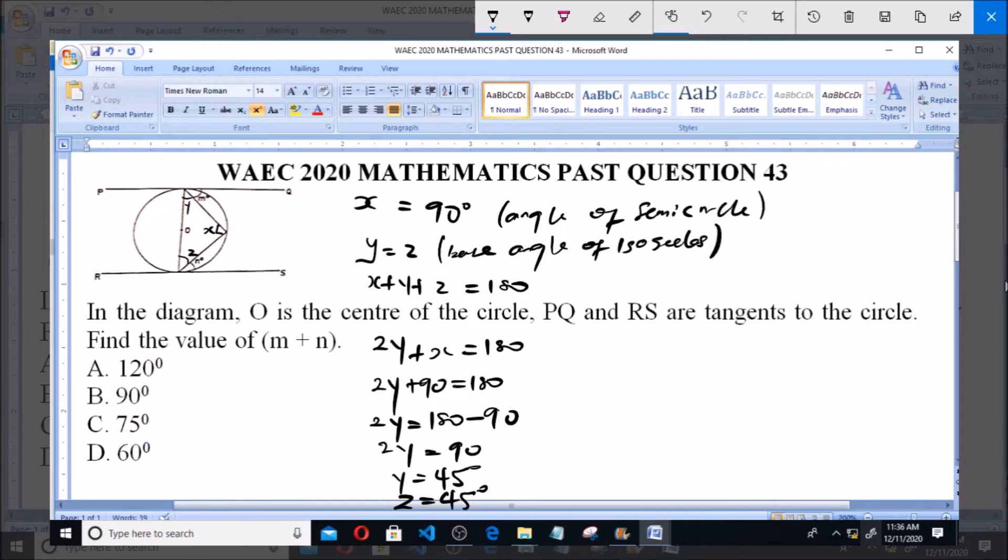Now, angle M equals 90 minus Y. This is because Y and M form a right angle to this tangent. Therefore, M equals 90 minus 45, and that equals 45 degrees.